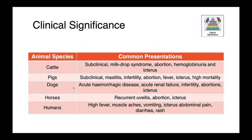There are a wide variety of presentations seen with Leptospira, even among individual animals. In cattle, it can range from subclinical infections to milk drop syndrome, abortion, hemoglobinuria, and icterus. In pigs, presentations include subclinical infection, mastitis, reproductive issues, fever, icterus, or high mortality events. In dogs, we see acute hemorrhagic disease, acute renal failure, infertility, abortions, and icterus. In horses, recurrent uveitis, abortion, and icterus. And in people, high fever, muscle aches, vomiting, icterus, abdominal pain, diarrhea, and rash. Icterus is a recurring theme.